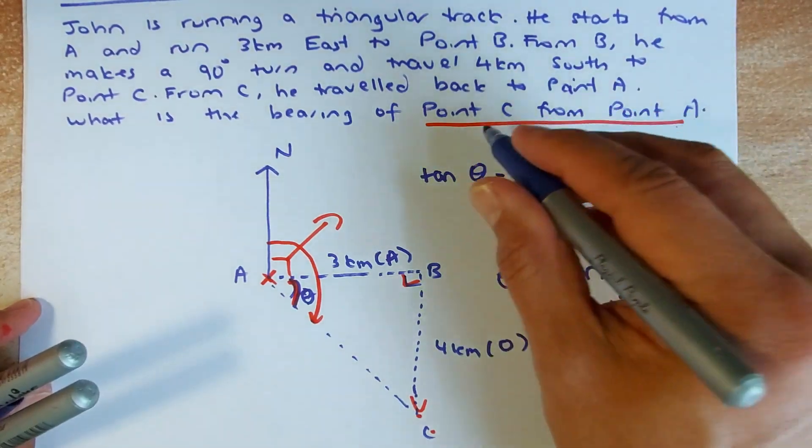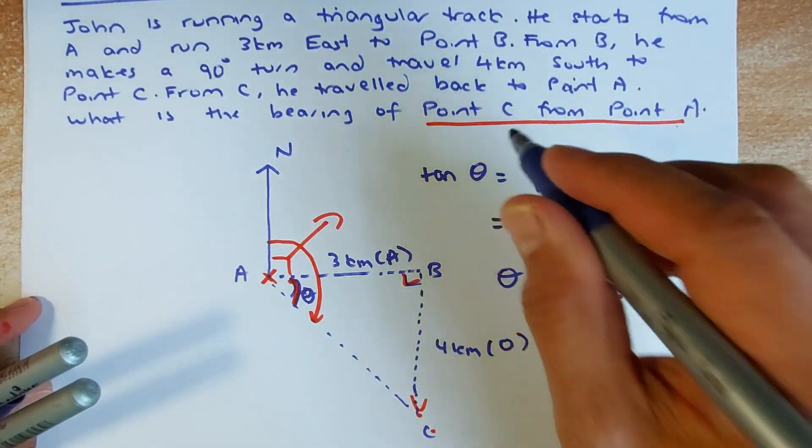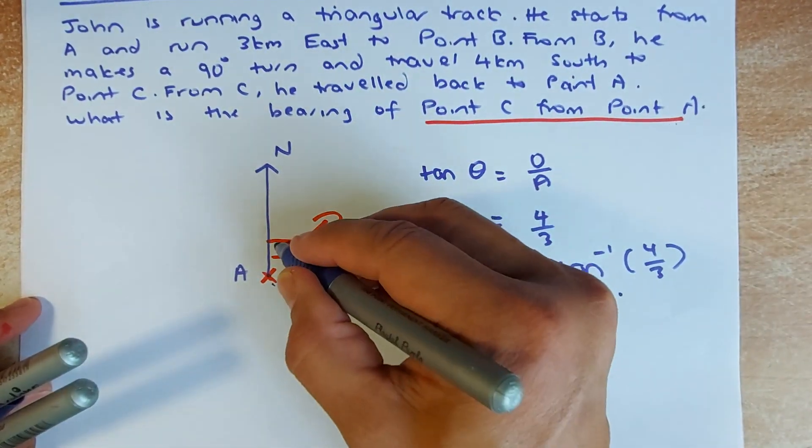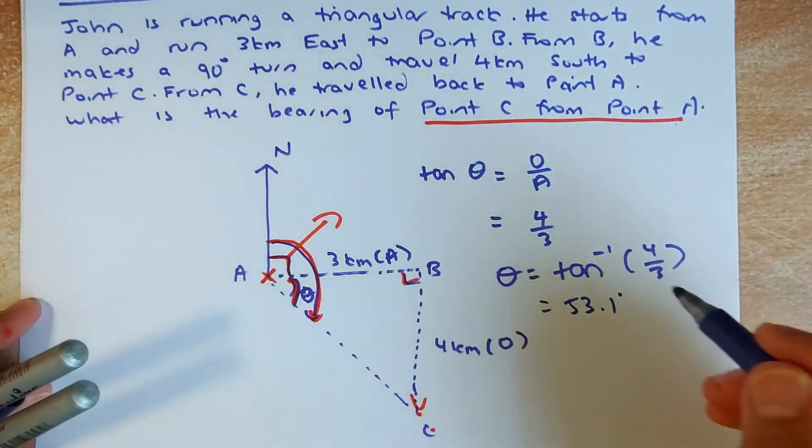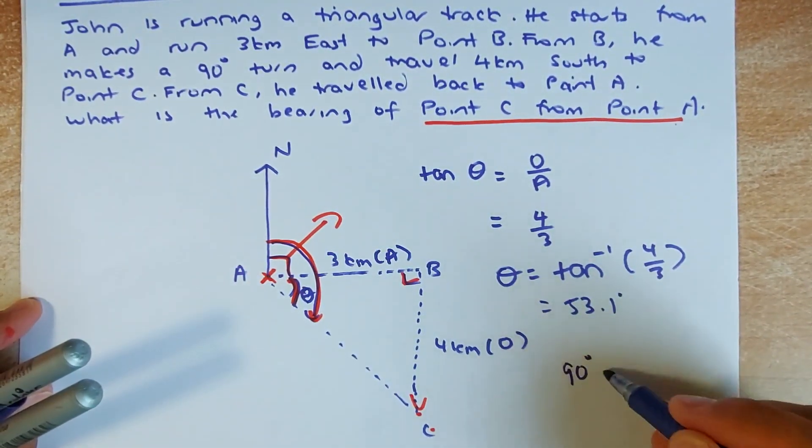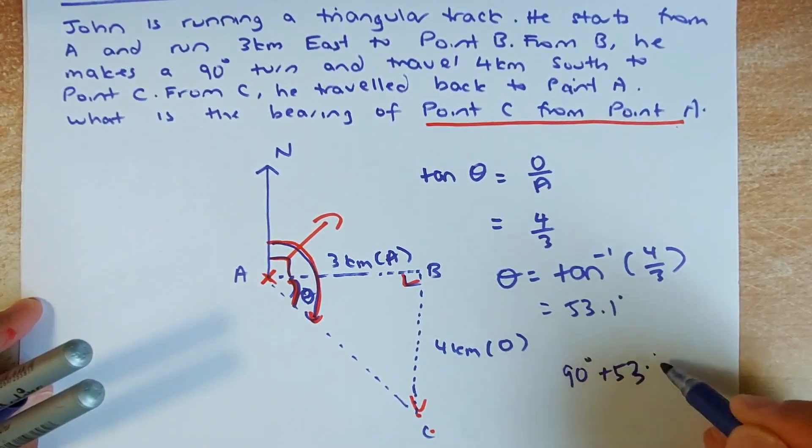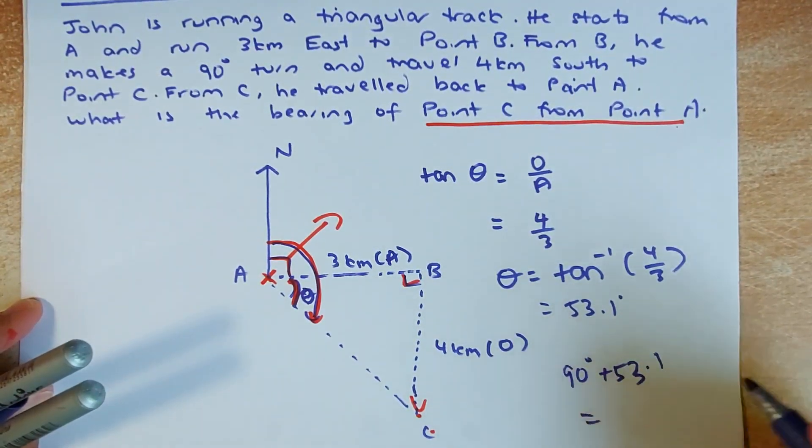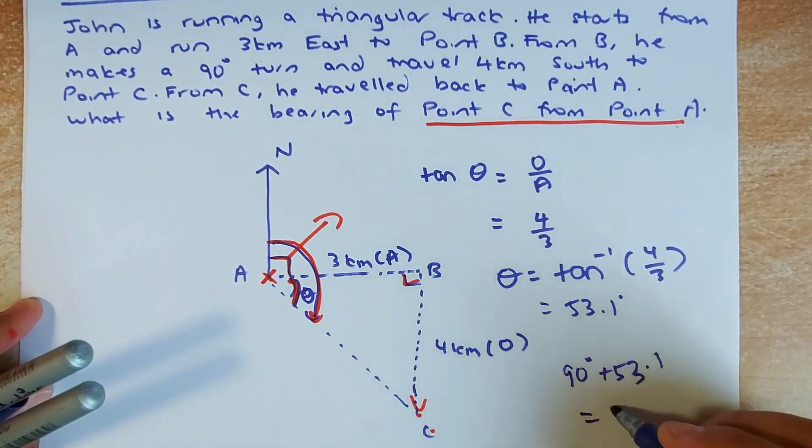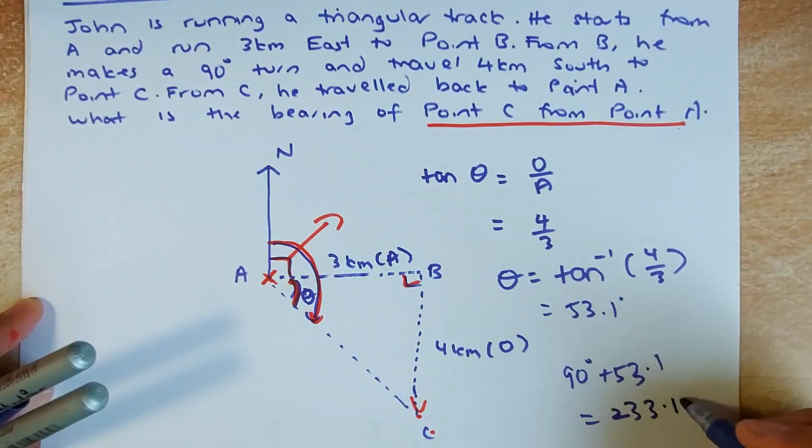So the bearing of point C from point A, that angle here is going to be 90 degrees plus 53.1 degrees and the bearing is going to give you 143.1 degrees.